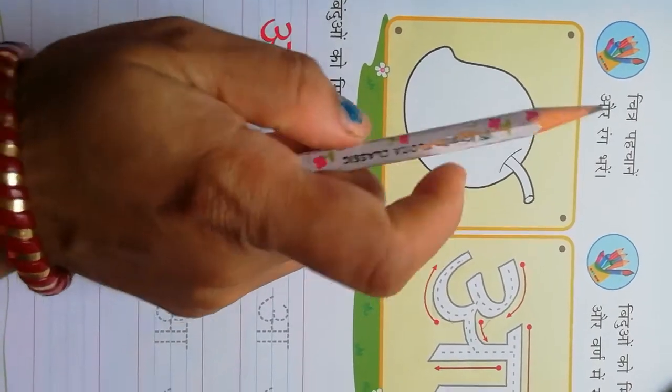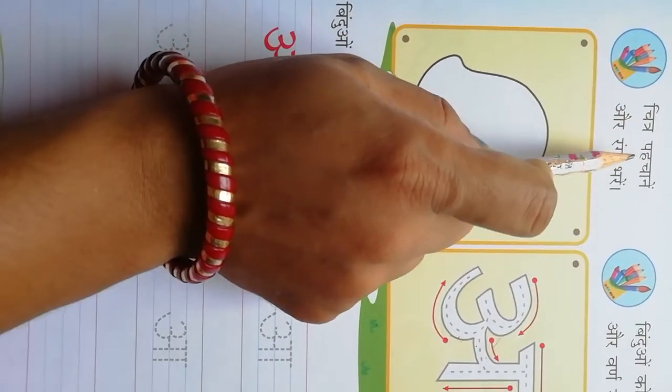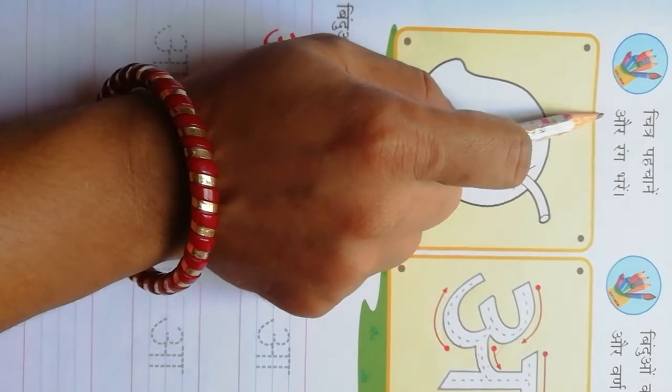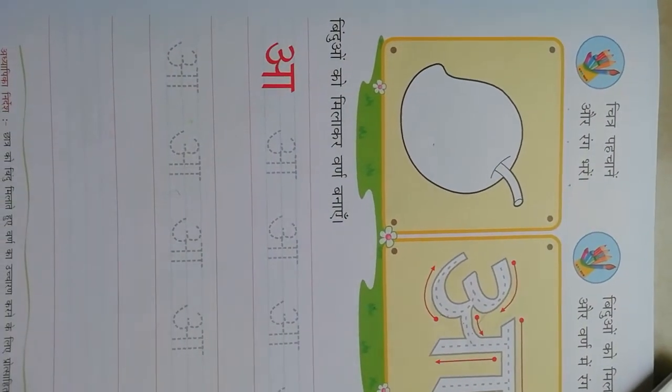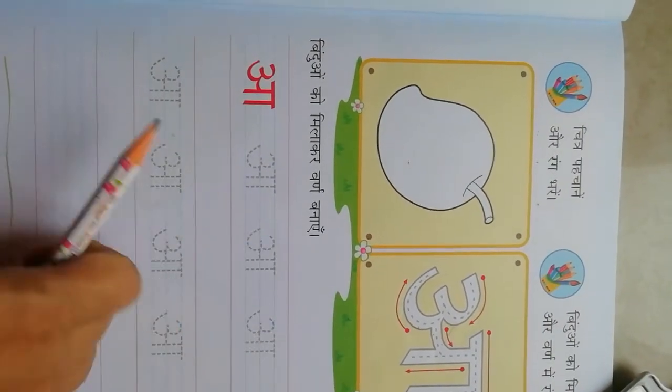Aah se aahm. Aahm ko chitro, pachano, or rung bharo. Aahm ko rung karne ka. Aahm pe color karne ka hai. Okay.